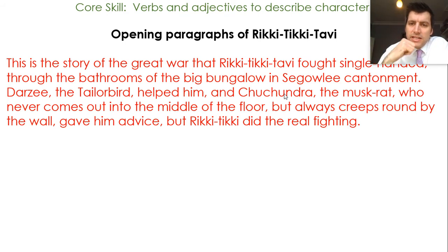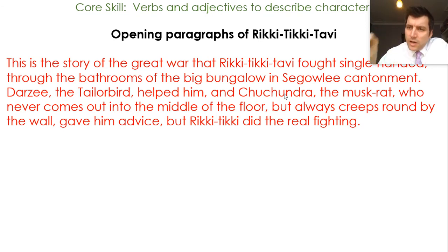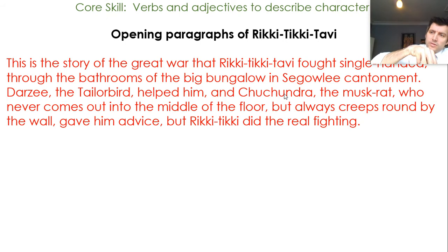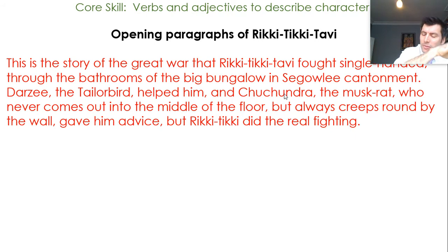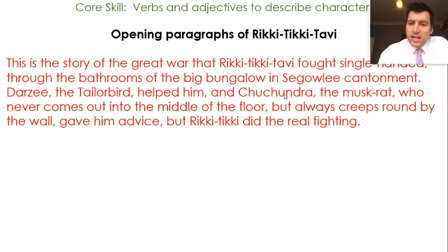I can see the setting building up — the smallest element first, the bathrooms, then the bungalow it's placed in. I might know what a bungalow is, or I might infer from context that it's a small type of building. Then Segowlee, with a capital letter, is a proper noun — a place name for somewhere larger where a number of residents reside. I can see the tailor bird's name is Darzi, and the muskrat's name is Chuchundra. Chuchundra is in the middle of a sentence but starts with a capital letter.